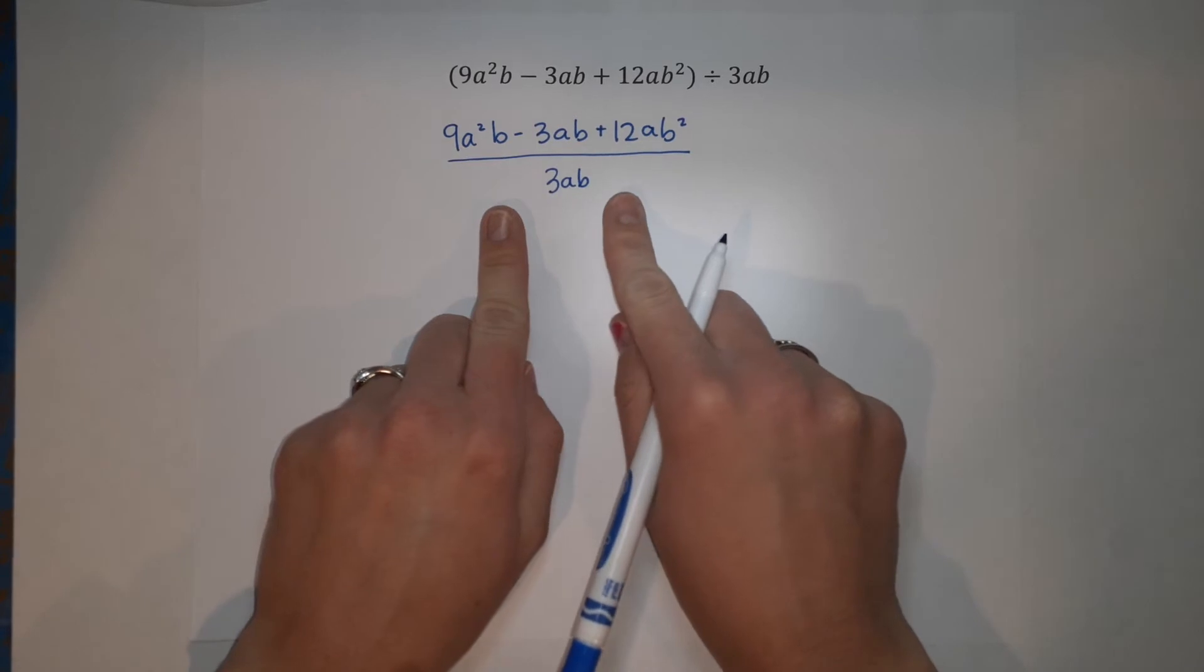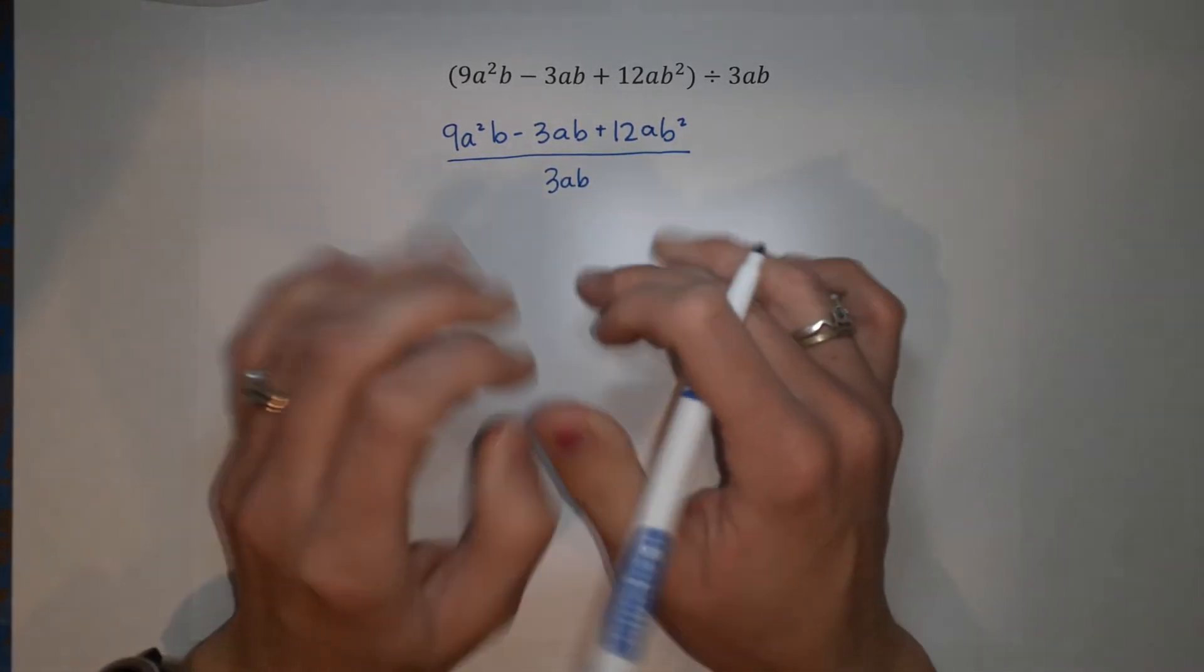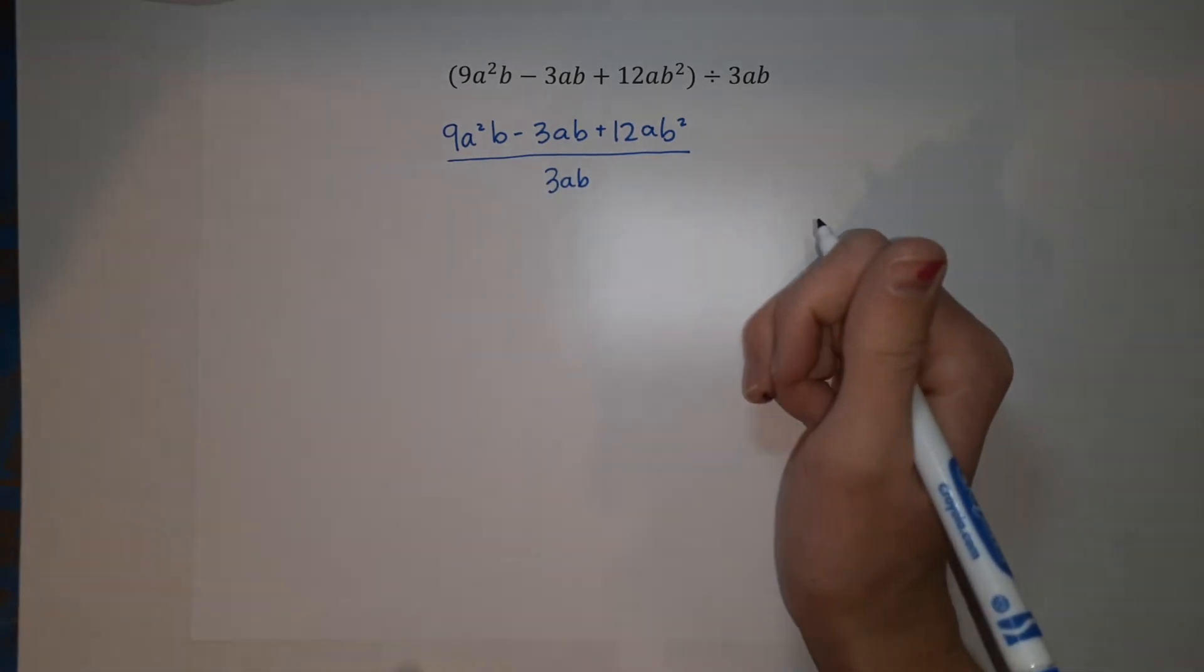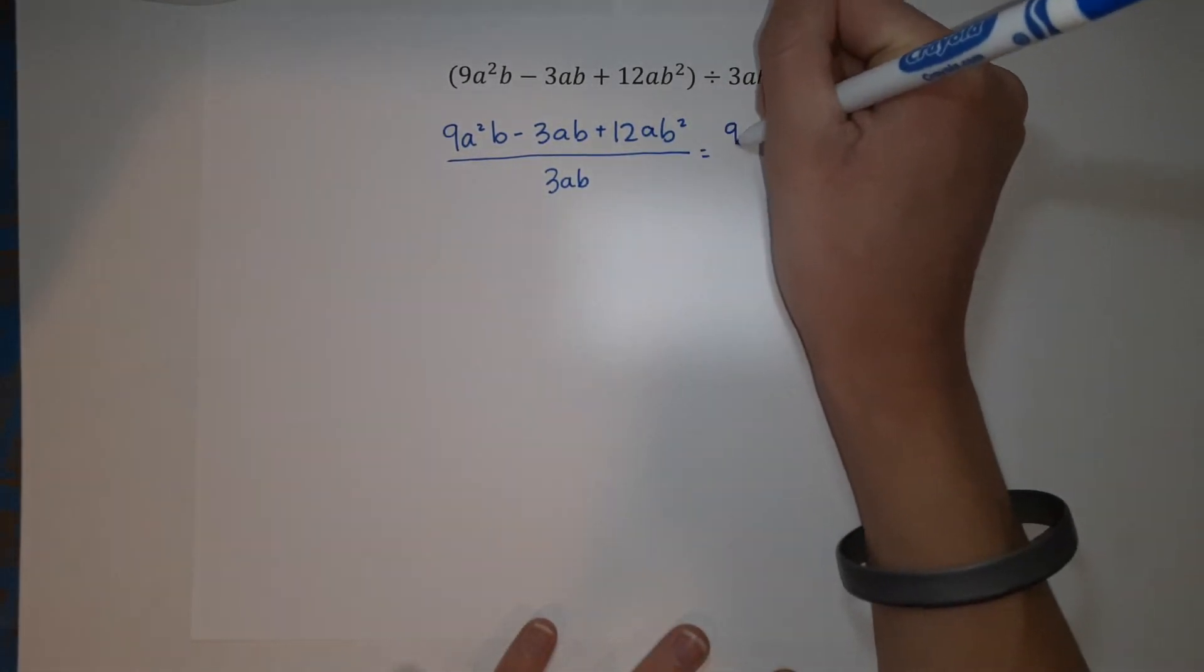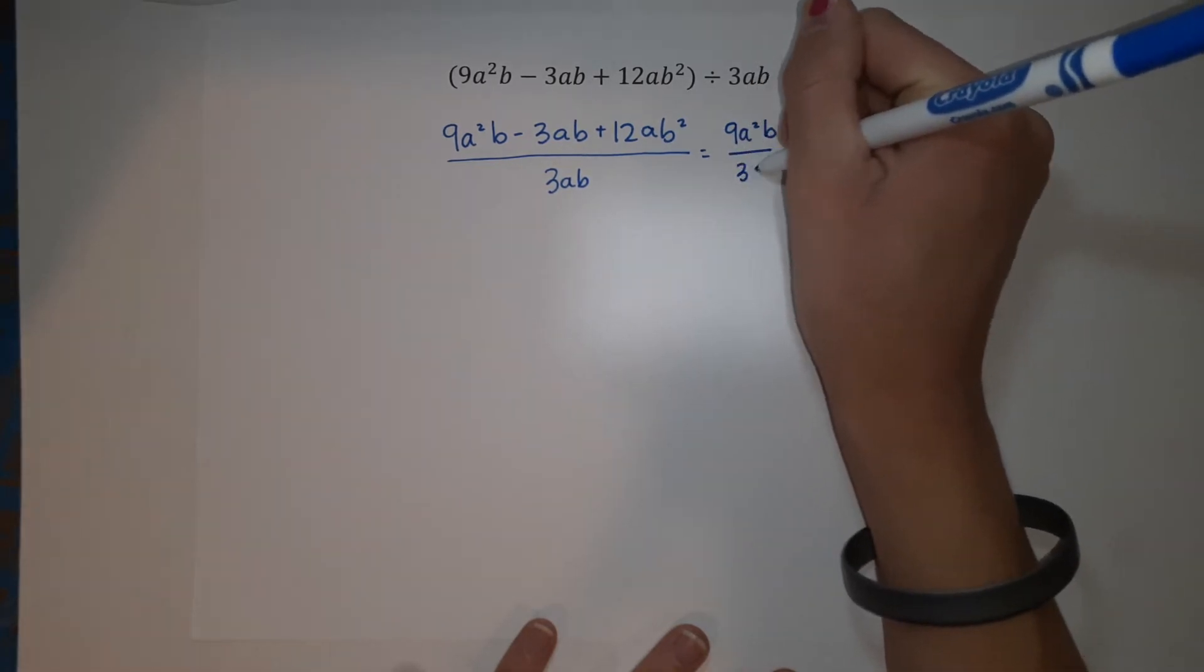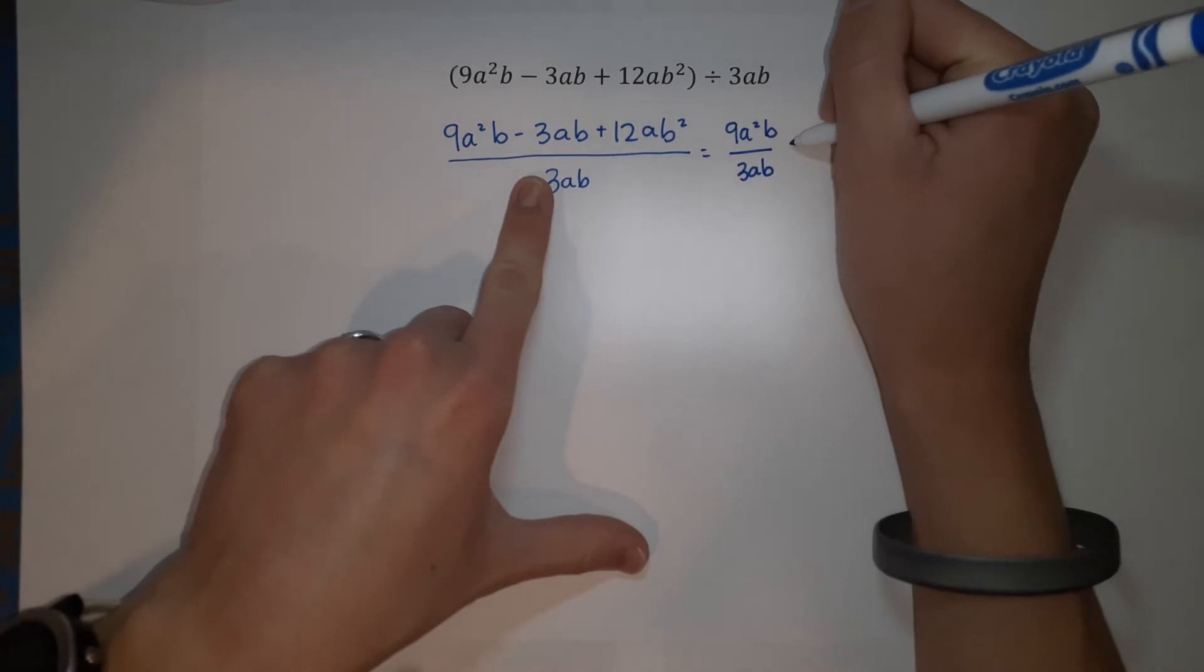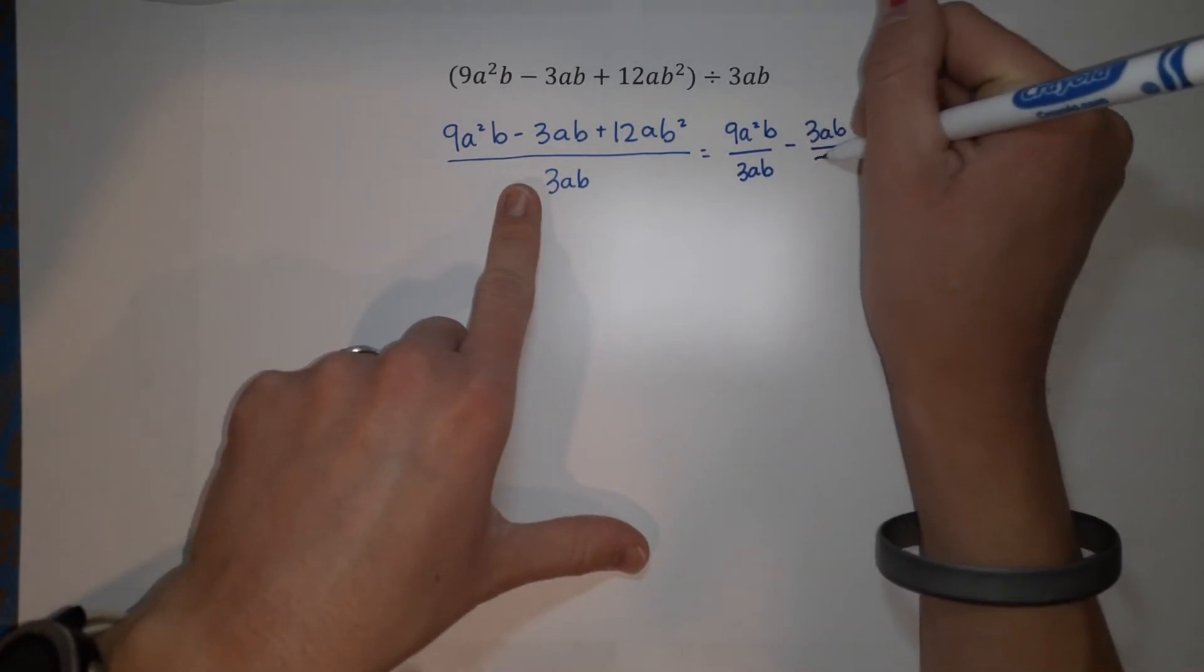So what we're going to do is we're going to break this up. This is kind of another form of the distributive property. So what we're going to do is 9a squared b over 3ab minus 3ab over 3ab.